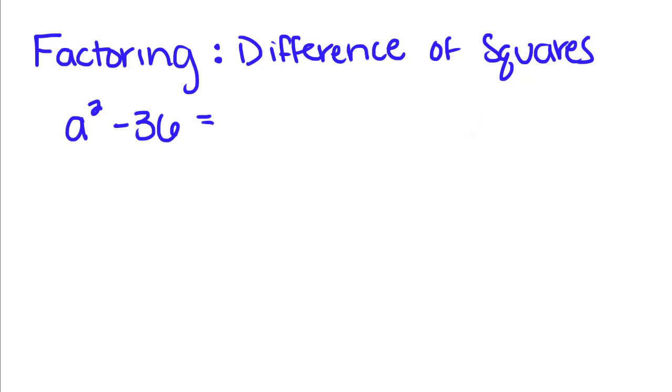Anytime you see a difference of squares, which just means that the first term is a perfect square and the second term is a perfect square and there's no middle term, you're going to factor it like this. You take the square root of the first one plus the square root of the second one and multiply it by the square root of the first one minus the square root of the second term.